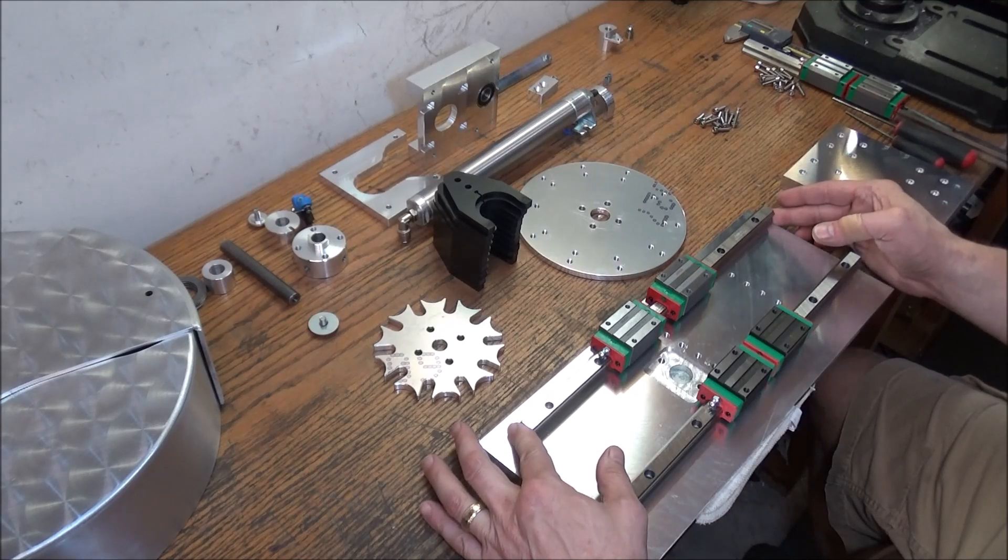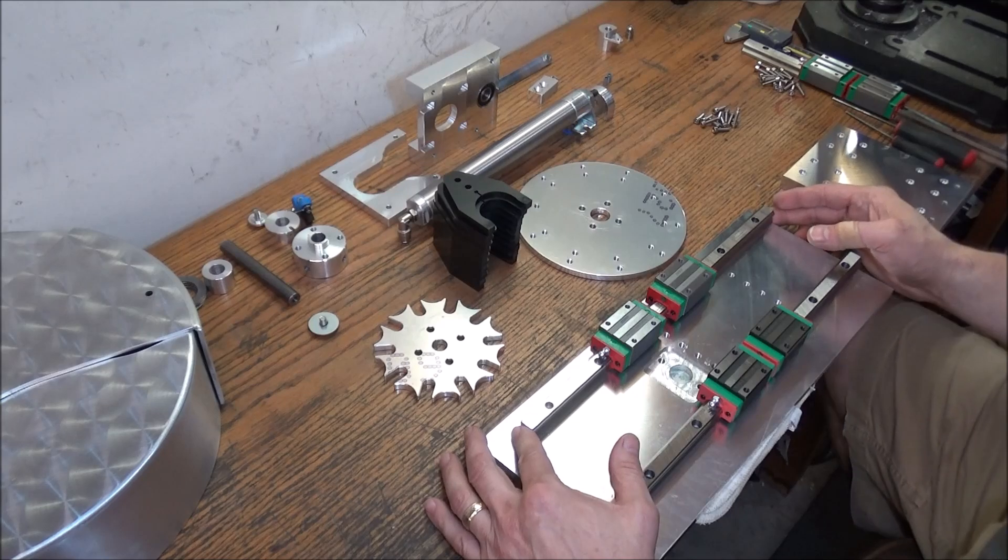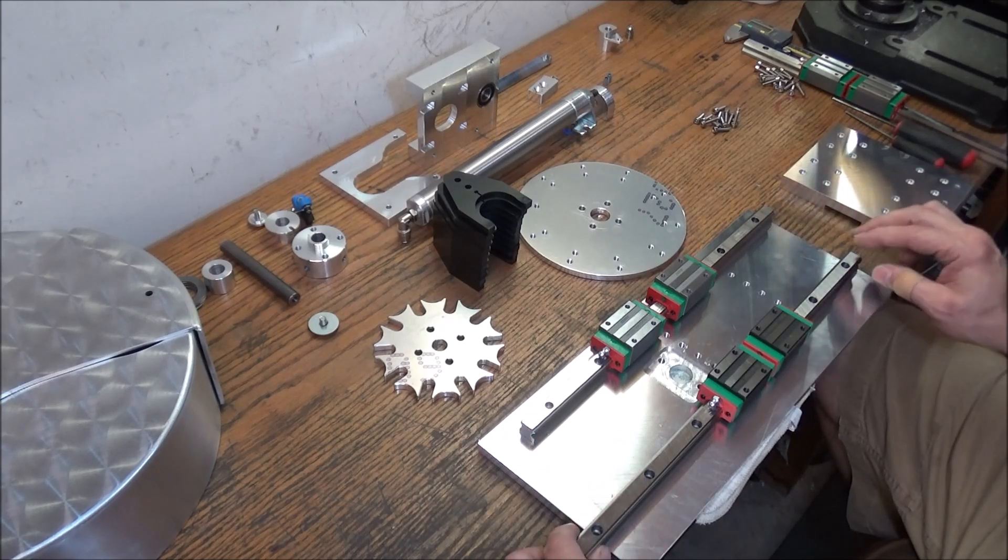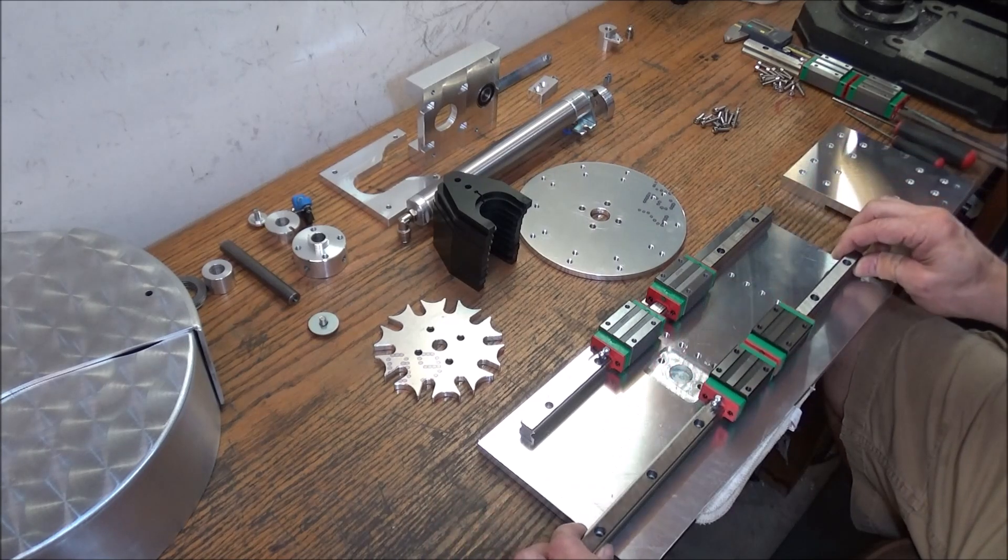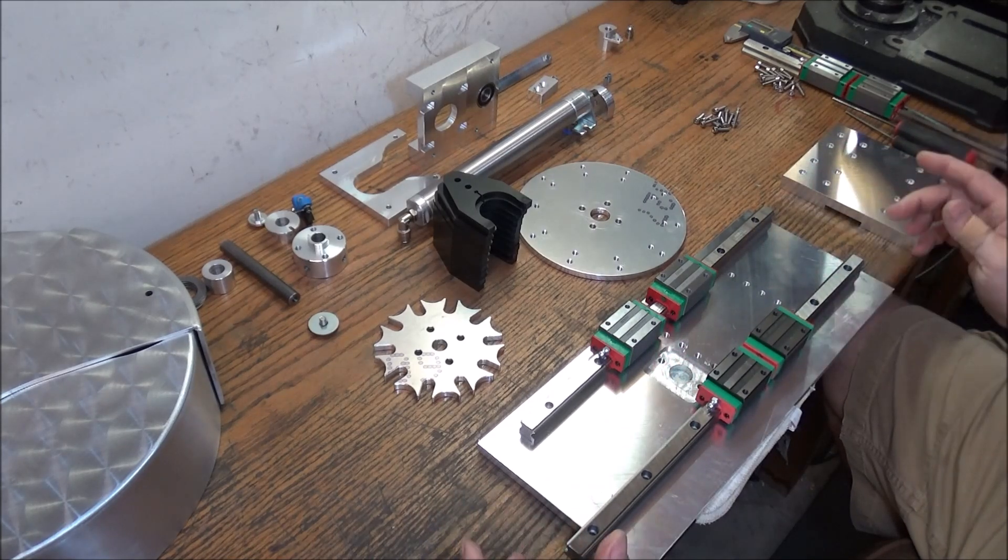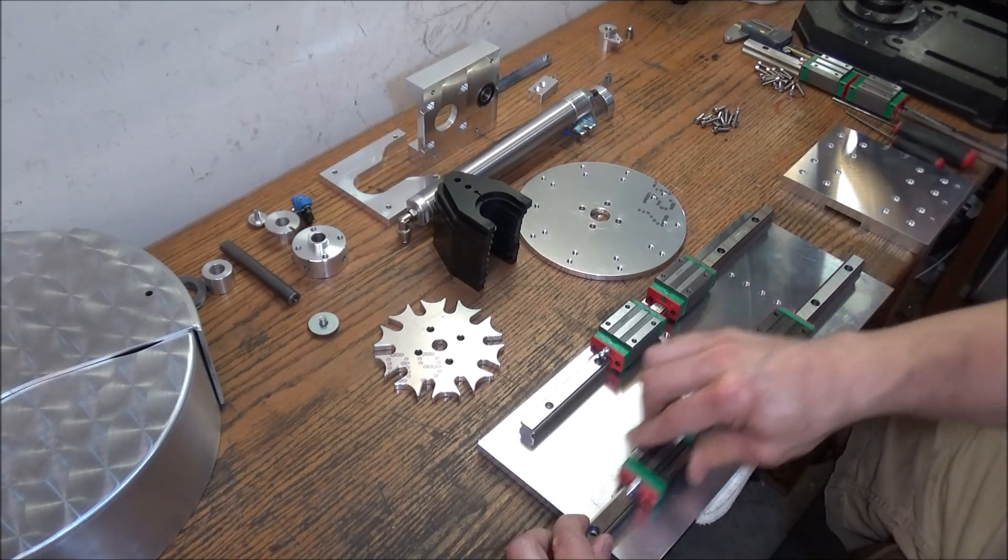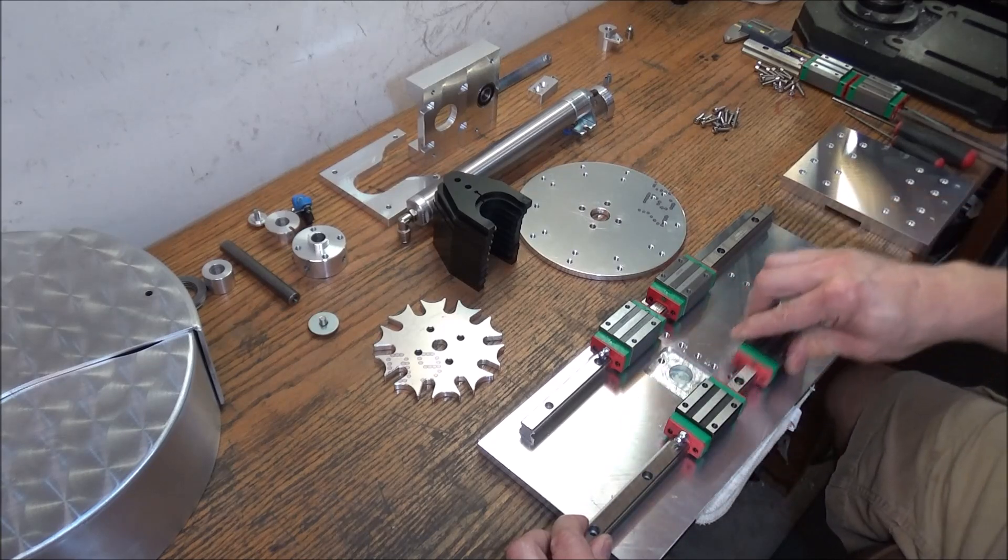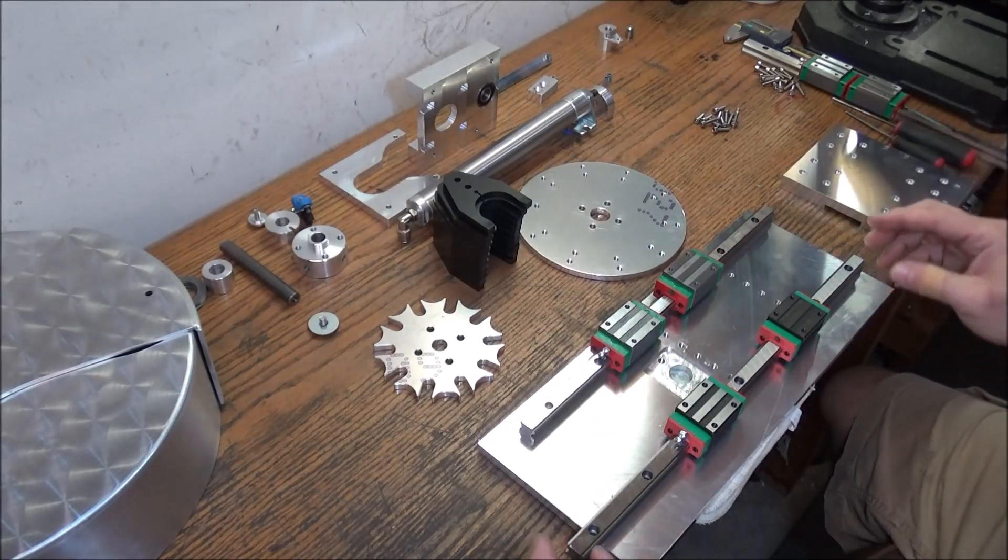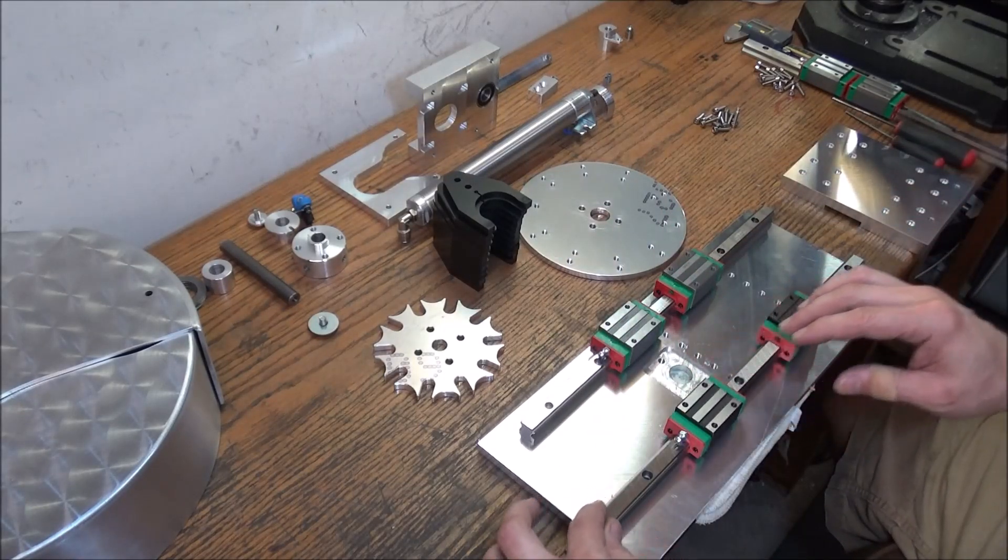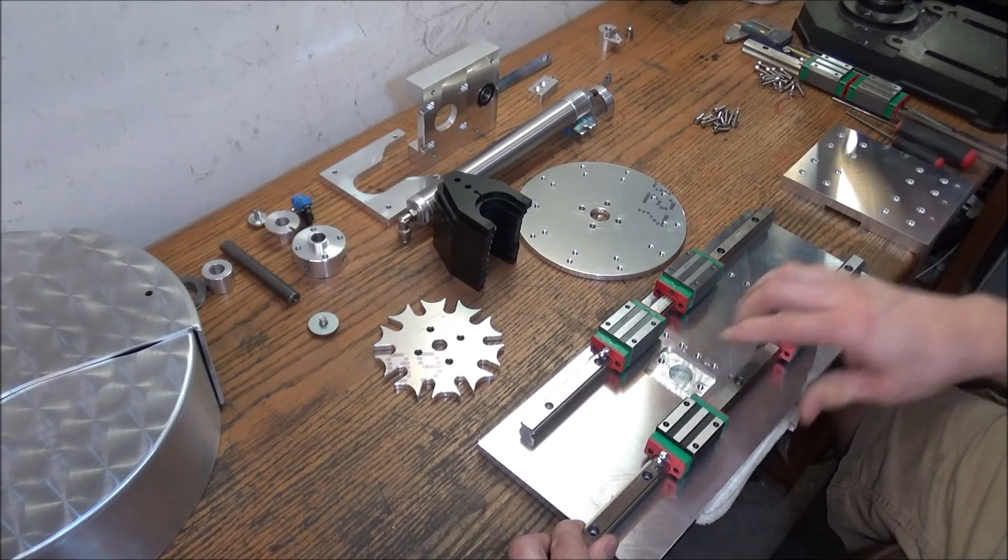These are 350 millimeters long, they're HGH and HGR 15. These knockoff rails, as you can see, they're really pretty good quality. You can tell that they're not Hiwin quality, however they feel really good. They're actually a little easier to slide back and forth than the Hiwin. It's probably due to a little bit less precision.